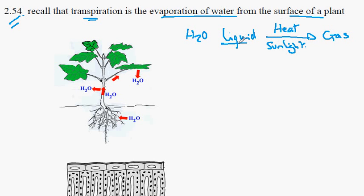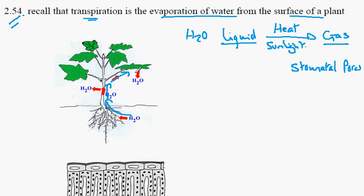The liquid water is turned into gas and the evaporation occurs through the stomatal pores. On the diagram here, water is taken up in the root system by osmosis, travels up through the stem, out through the petiole, and then we see the evaporation of the water through the stomatal pores. The sunlight warms the leaf, creating the heat for the change of water from the liquid to the gas phase so that it can escape by evaporation.